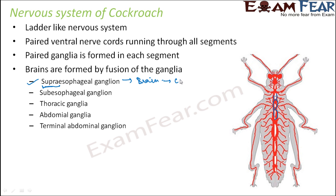The brain supplies nerves to the antennae and the compound eyes. That is the supraesophageal ganglia. Next is the subesophageal ganglia, which is below the esophageal region. Next, you have the thoracic ganglia formed in the thoracic region, and then the abdominal ganglia in the abdominal region.